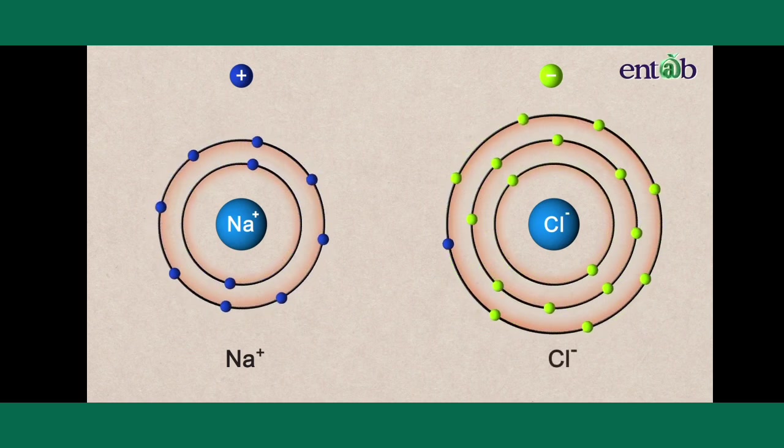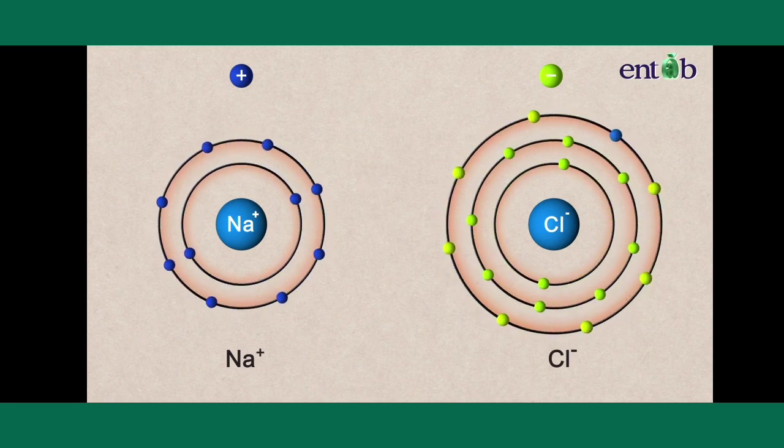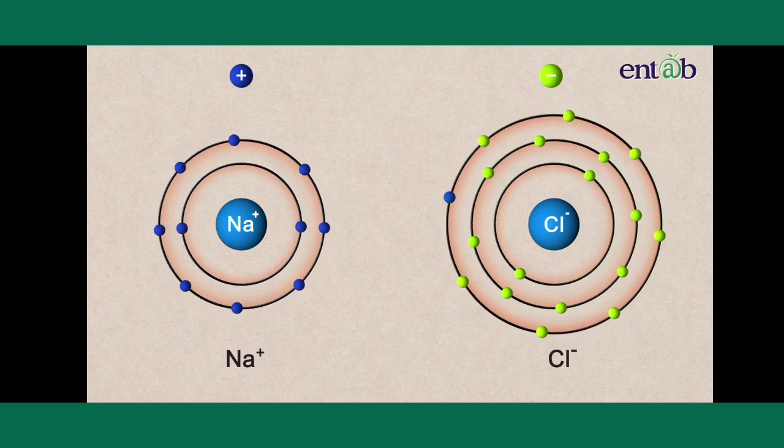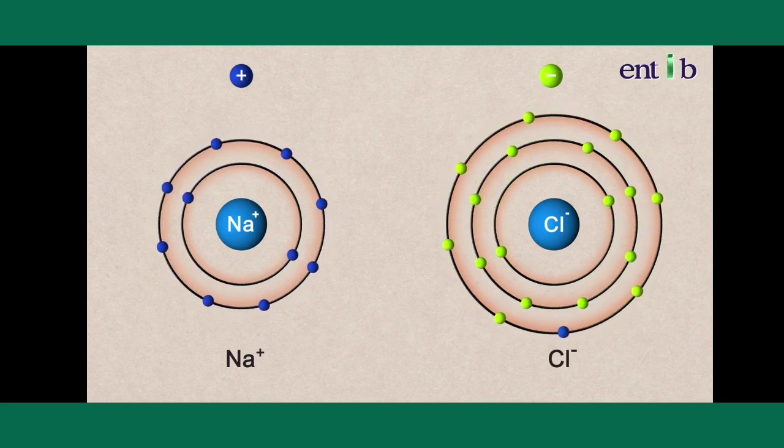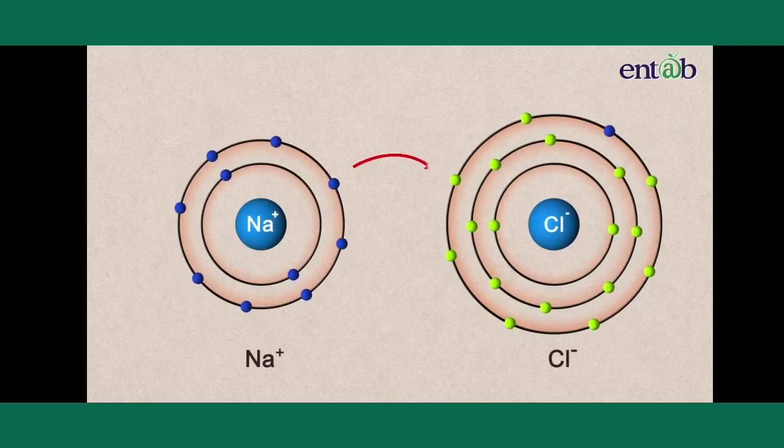If you look carefully, you will see that there are eight valence electrons around Cl-. This donation of an electron can be shown by the arrow.